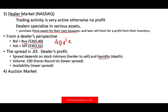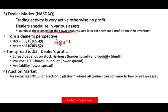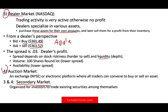We also have the auction market — the fourth type. Think about the NYSE, where all traders converge to buy and sell in one location or one electronic platform. Markets three and four — dealer and auction — are called the secondary market, where investors trade stocks among themselves, not from the company itself. The dealer market and auction market mainly deal with the secondary market.